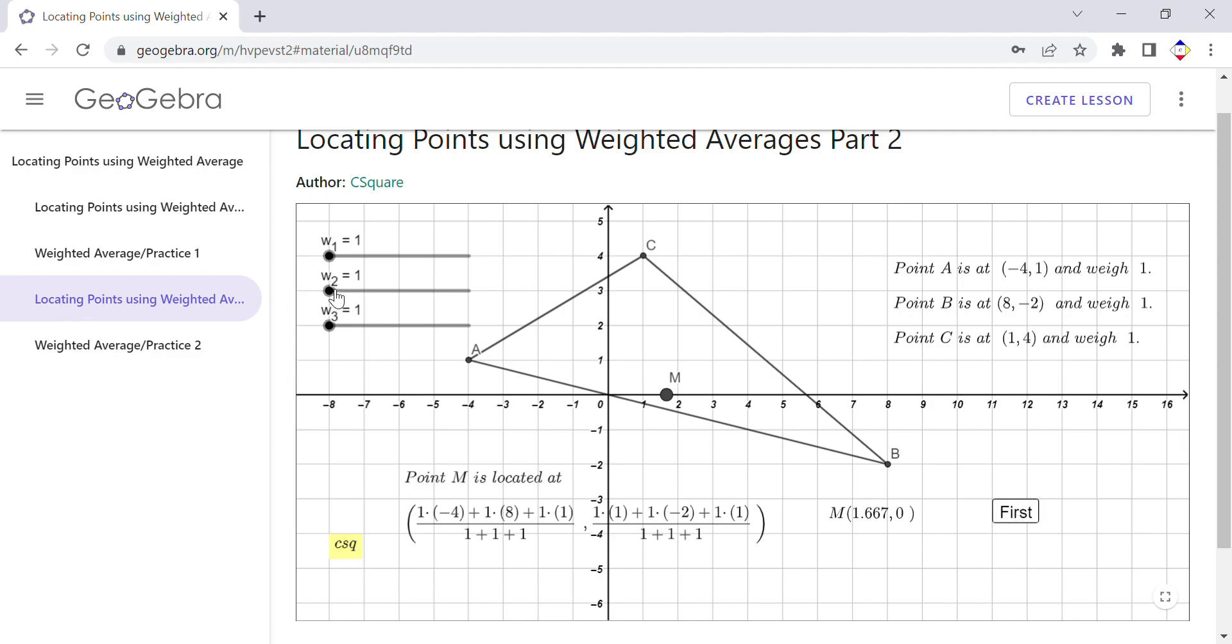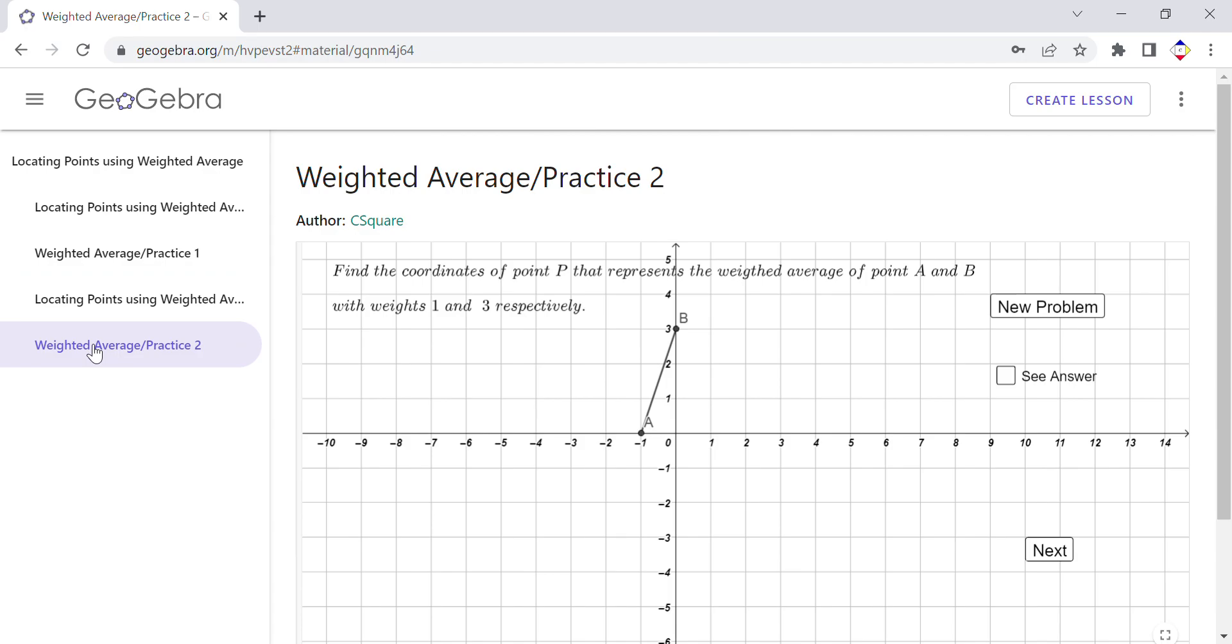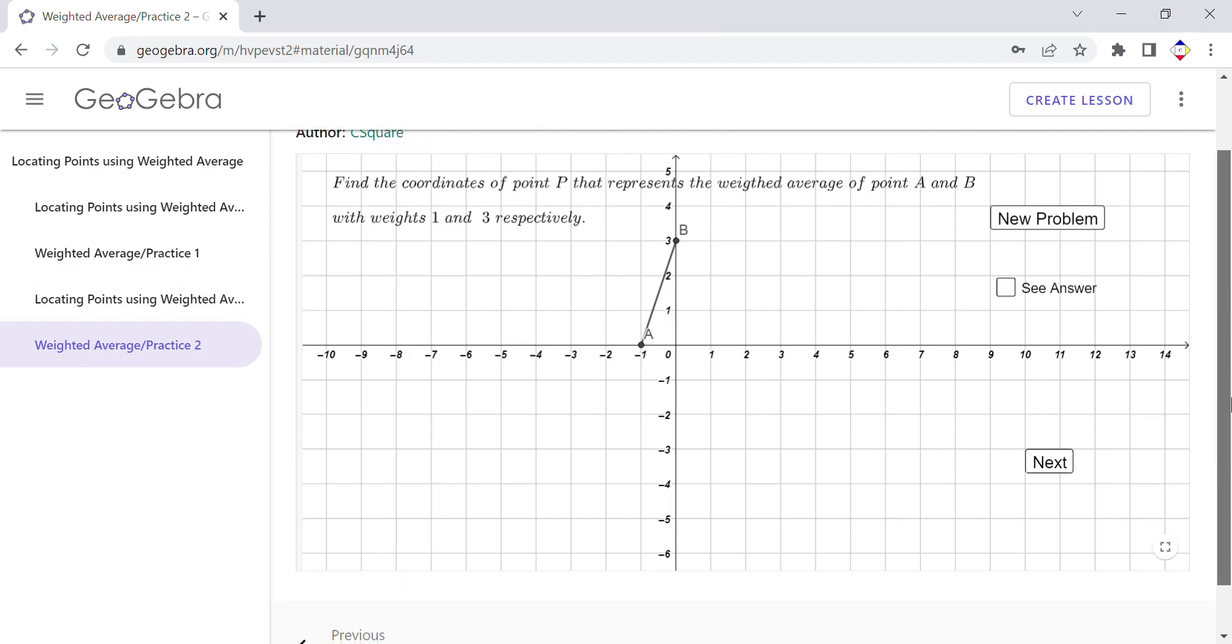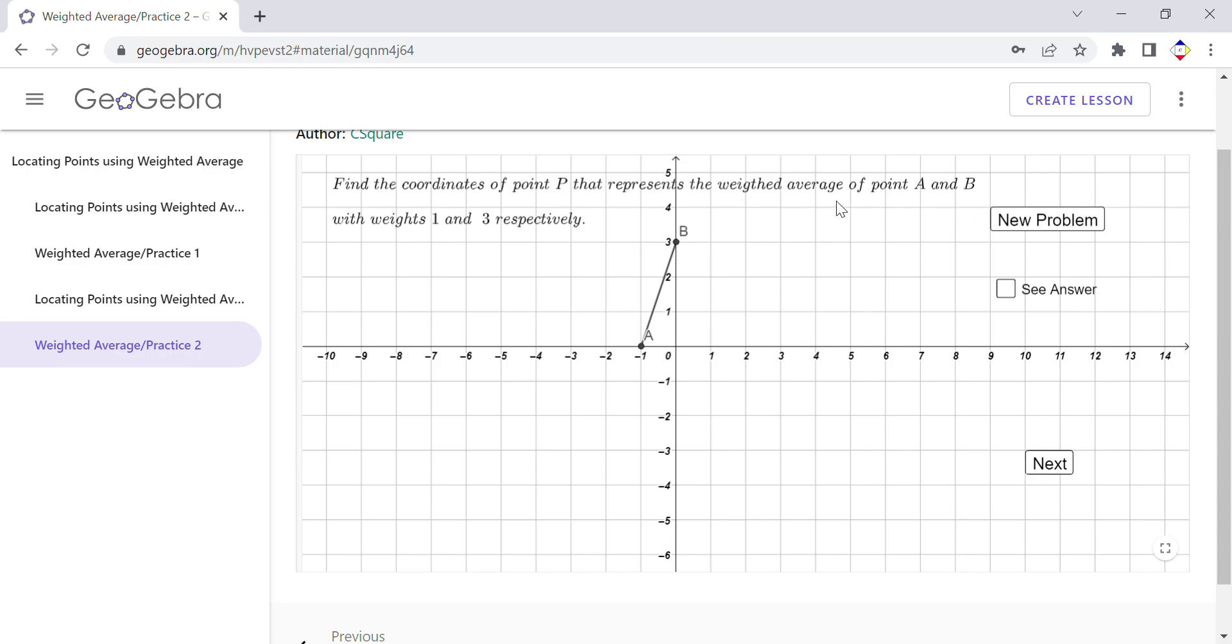The last part of this GeoGebra book is another app where you can practice in the coordinate grid. The same thing. You start with two points, you do the math, and then you check your answer. See if you get that, and you can click then uncheck this.